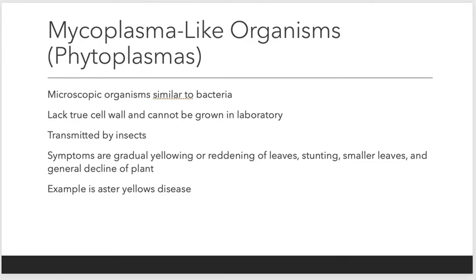Mycoplasma-like organisms are very microscopic organisms, very similar to bacteria, but they lack a true cell wall. We have a hard time growing them in the laboratory, so we often look at them under the microscope from a real-life specimen. These are a lot of times transmitted by insects. Symptoms include gradual yellowing or reddening of the leaves, stunting, smaller leaves than normal, and over time a general decline in the plant. If you want to look up an example, try Aster's yellow disease — the plant turns yellow over time with very small leaves.